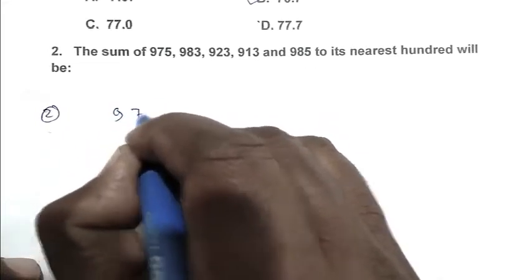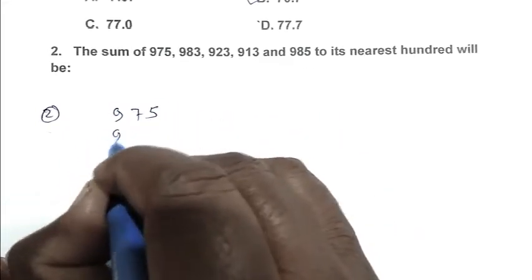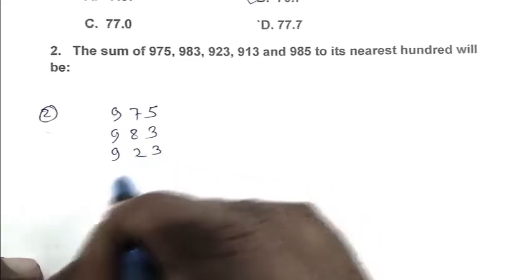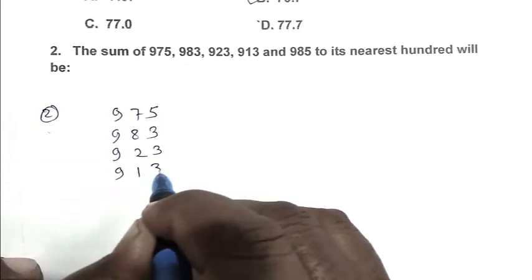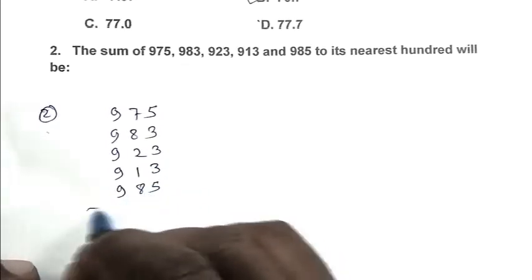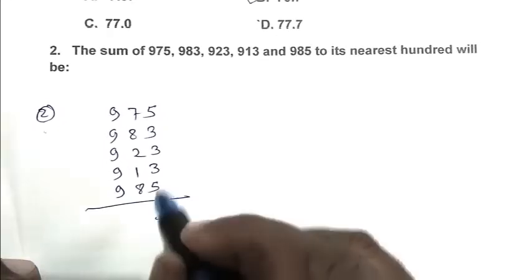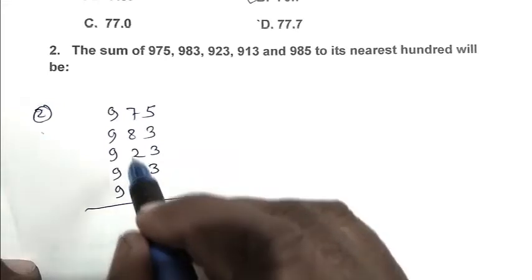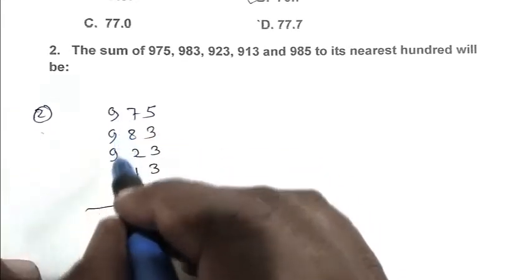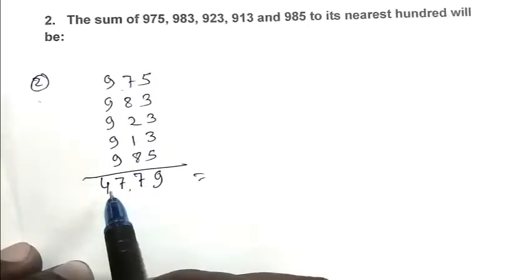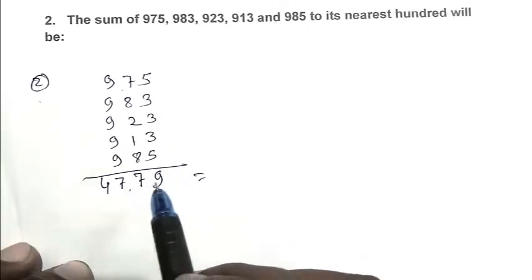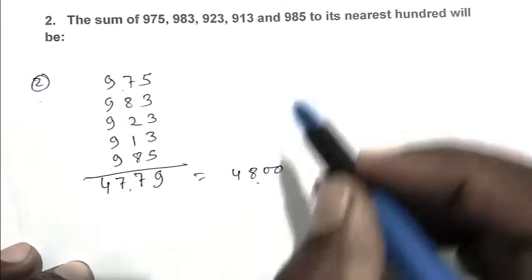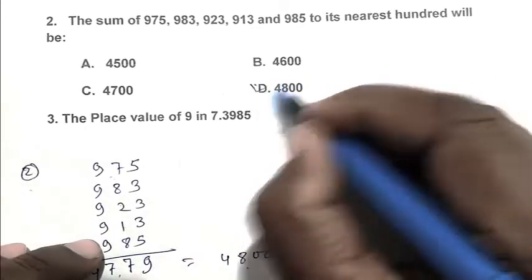So, 975, 983, 923, 913 and 985. 9 carry 1 that is 910, 107 carry 2, giving us 4779. If we take the nearest 100 of 4779 that is 4800. So, D is the right answer.